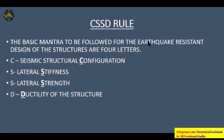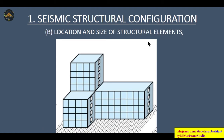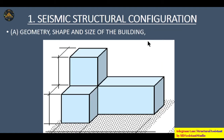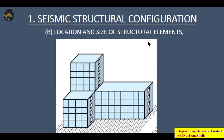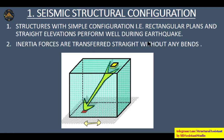The first point of seismic structural configuration is the geometry, shape, and size of the building. The structure should have an ideal geometry and ideal shape, and the size of the building should always be considered as an important parameter for determining earthquake forces. The second point is the location and size of structural elements, and the third is the location and size of significant non-structural elements.